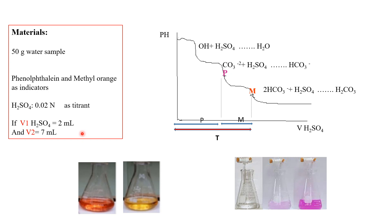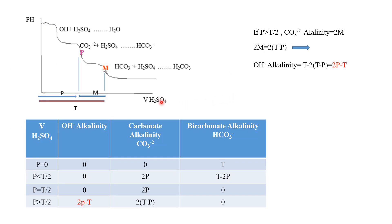Calculating the amount of these ions requires understanding some relationships. Based on this table, we learn how to calculate the three ions: hydroxide, carbonate, and bicarbonate. These three ions cause the alkalinity of water, and based on this table we learn how to calculate them.